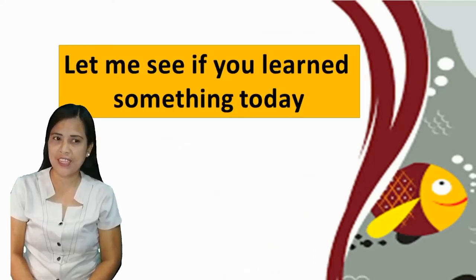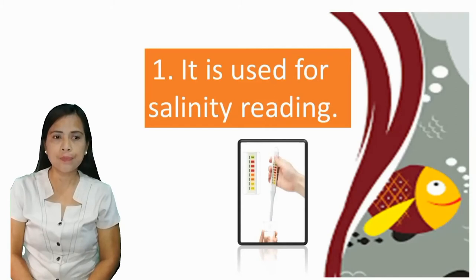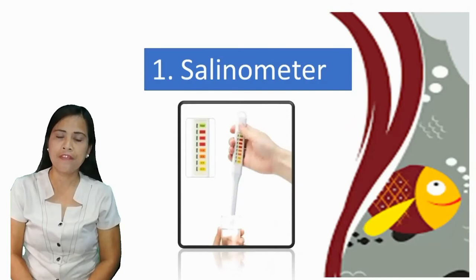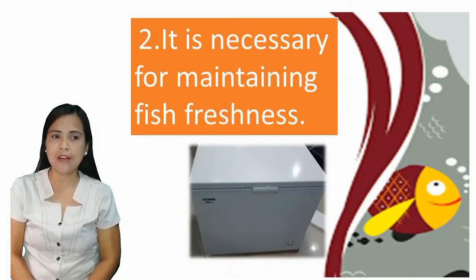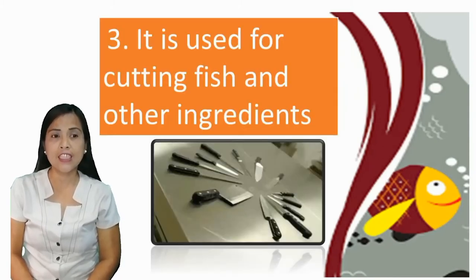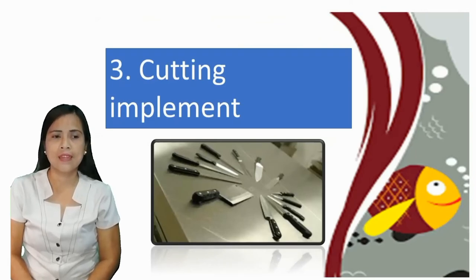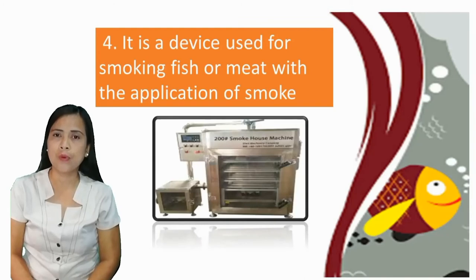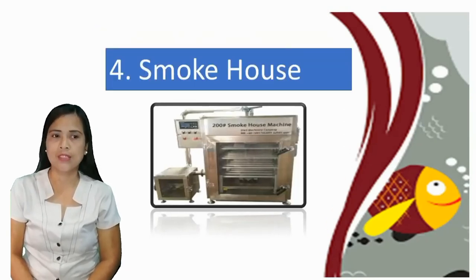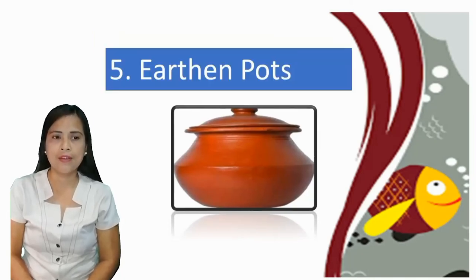Let me see if you learned something today. Try to identify the different fish processing tools, equipment, and utensils. Number one: it is used for salinity reading — salinometer. Very good. Next: it is necessary for maintaining fish freshness — chiller or freezer. Next: it is used for cutting fish and other ingredients — cutting implement. Next: it is a device used for smoking meat and fish with application of smoke — smokehouse. And the last: it is used for storing the salted products — earthen pots.